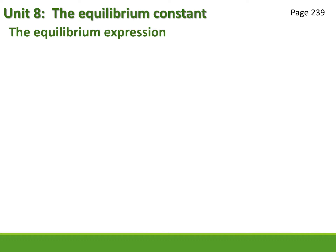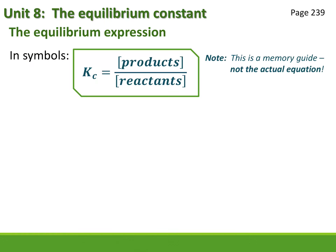The equilibrium constant gives us the ratio of the concentration of products to reactants at equilibrium. As an expression in symbols, it's the concentration of the products divided by the concentration of the reactants. That symbol is Kc — the symbol for the equilibrium constant. As I've written it here, this is a memory guide; you may not use it as an equation. It simply helps you remember: products over reactants at equilibrium.